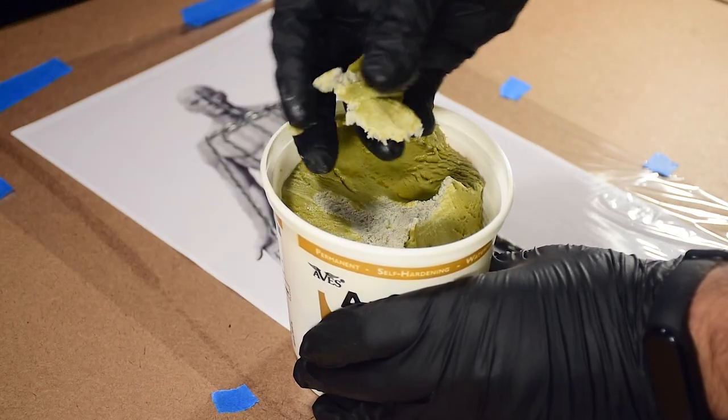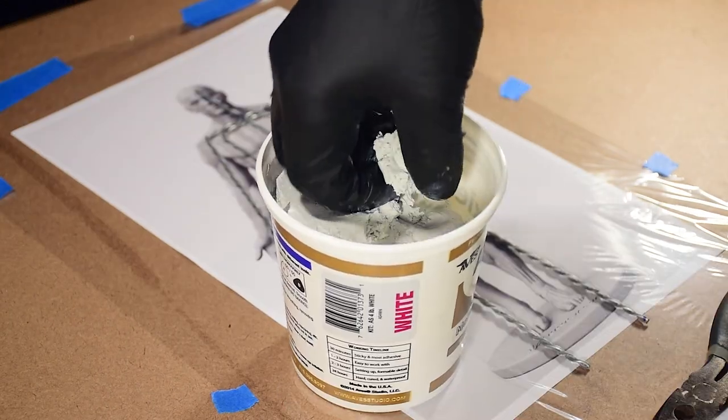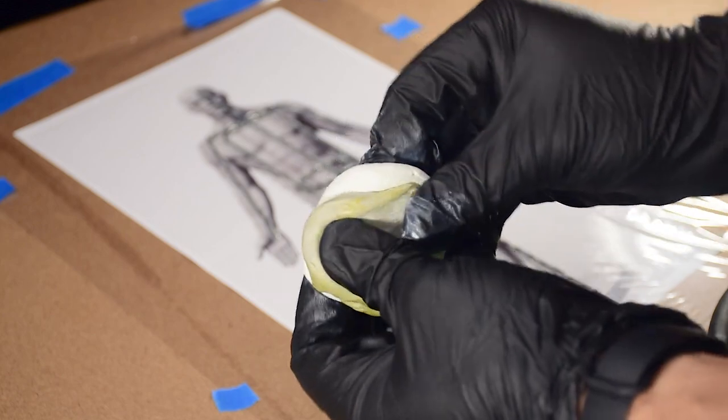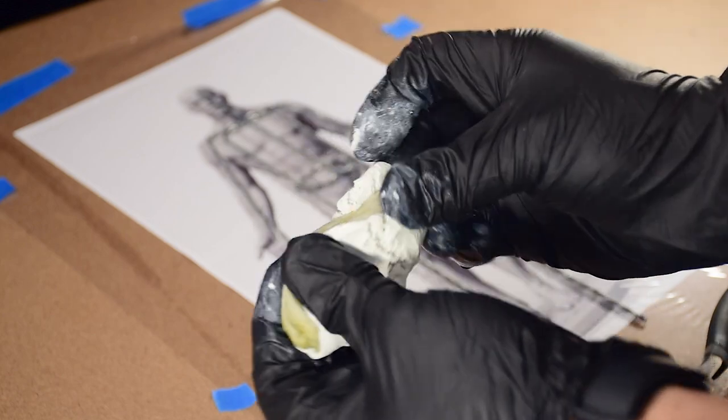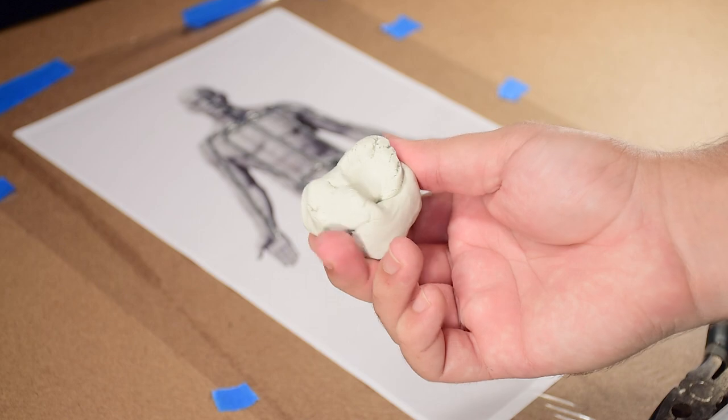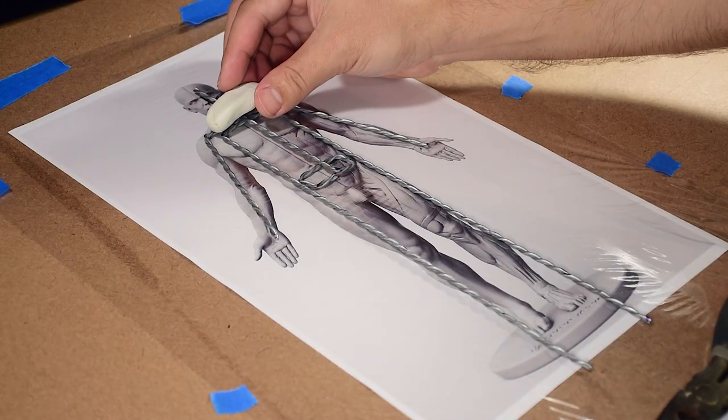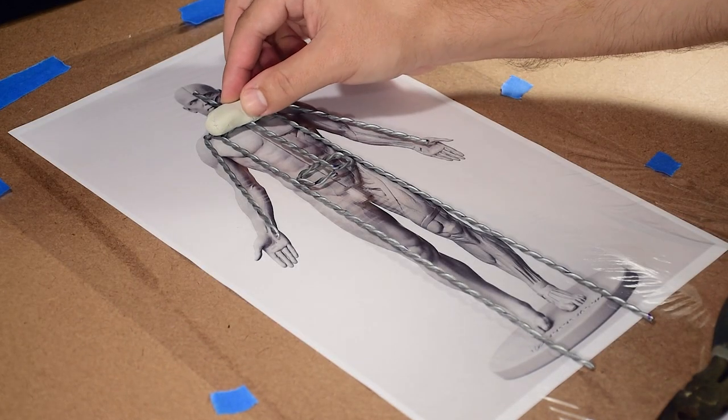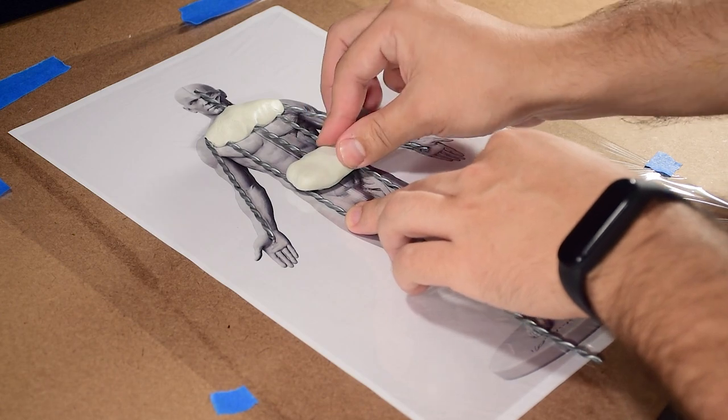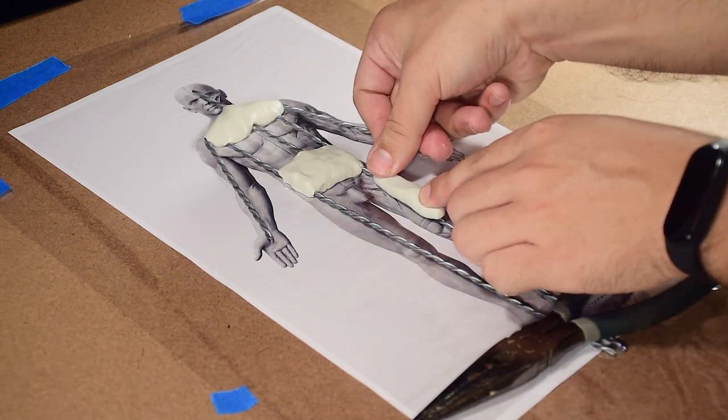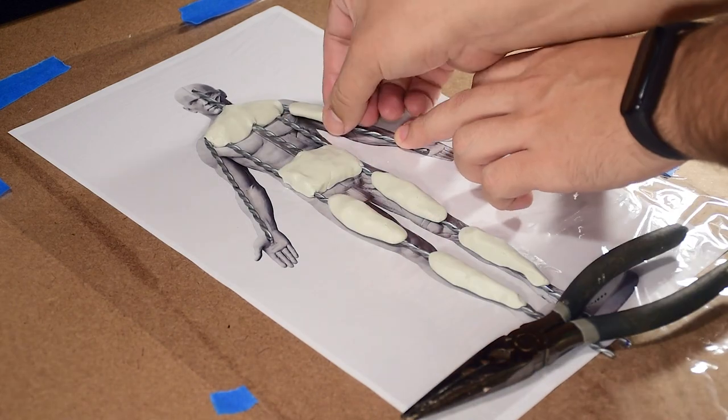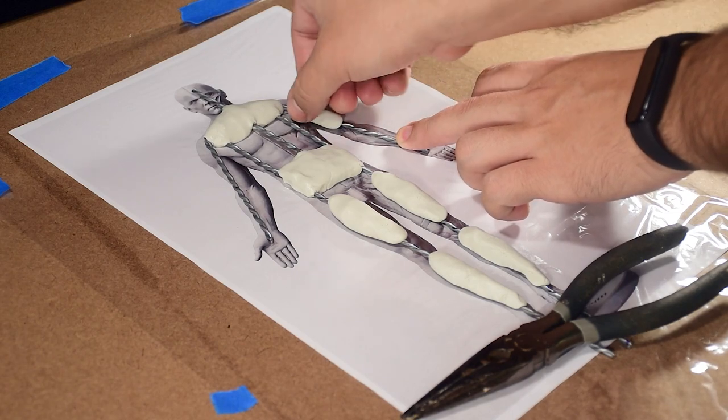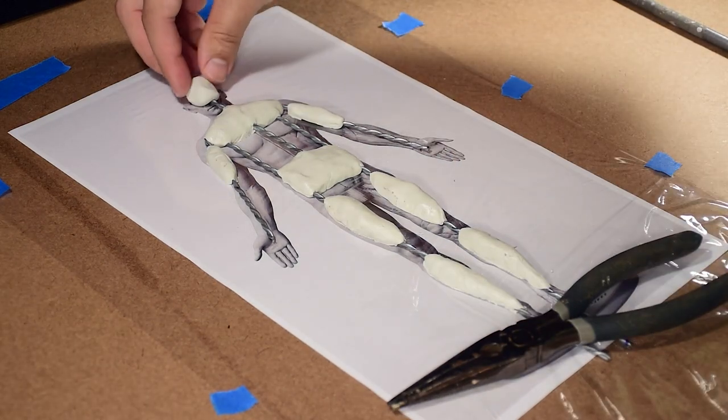Now we mix the two-part epoxy to reinforce the structure. As you can see, this way we will have an armature capable of posing the way you want.